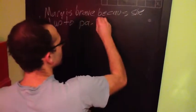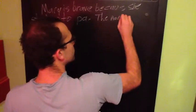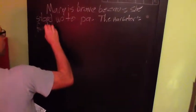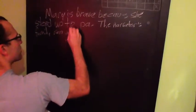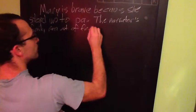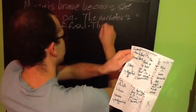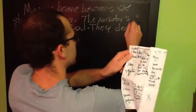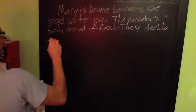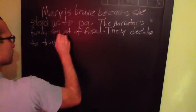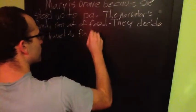Now, I've got to provide the context, which I already have in my pre-writing. The narrator's family ran out of food. They decide to travel to find work.